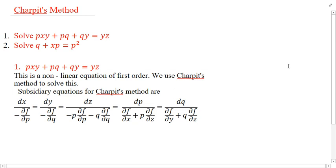Consider the first problem: solve Pxy plus Pq plus Qy equal to Yz. Here z is a function in x and y, small letter P is the partial derivative of z with respect to x, and small letter Q is the partial derivative of z with respect to y. This equation contains the term Pq, therefore it is not linear — it is a non-linear equation of first order, so we use Charpit's method.